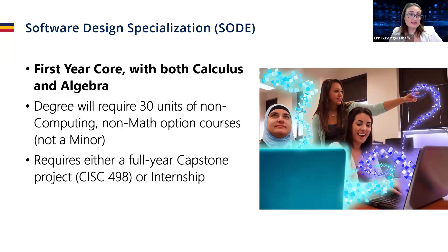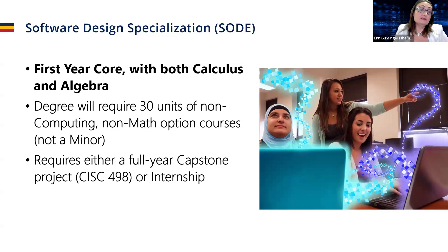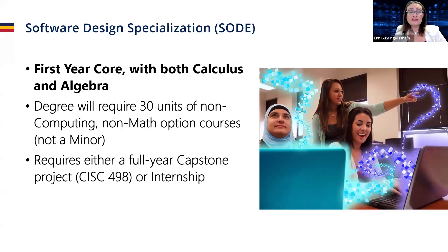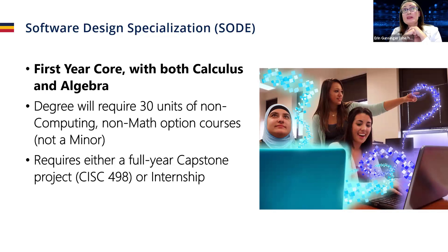The software design specialization is geared towards students who really dig coding. Again, you're taking first year core courses — CISC 102, 121, and 124 — plus calculus and algebra. This plan also requires the breadth requirement. It was another KIPPS-accredited plan. This is the one plan that will still require students to take either a full year capstone project course in fourth year — CISC 498 — or take an internship that is part of this plan, because it is a more hands-on focus.